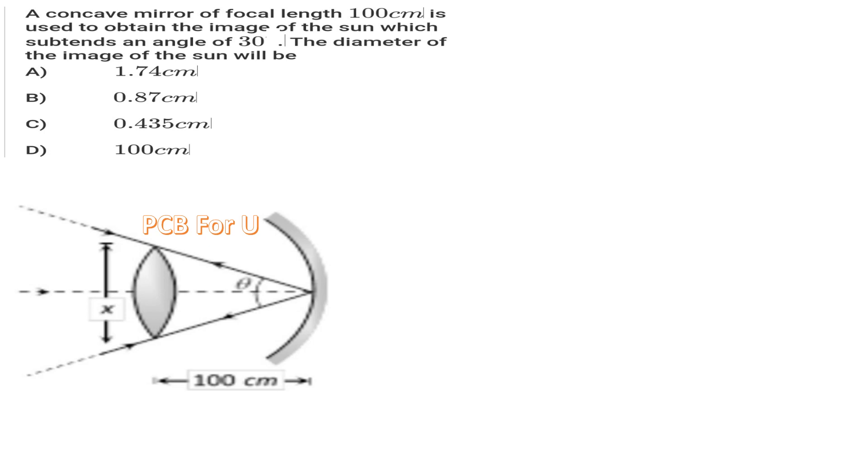A concave mirror of focal length 100 centimeters is used to obtain the image of the Sun, which subtends an angle of 30 minutes. The diameter of the image of the Sun will be...